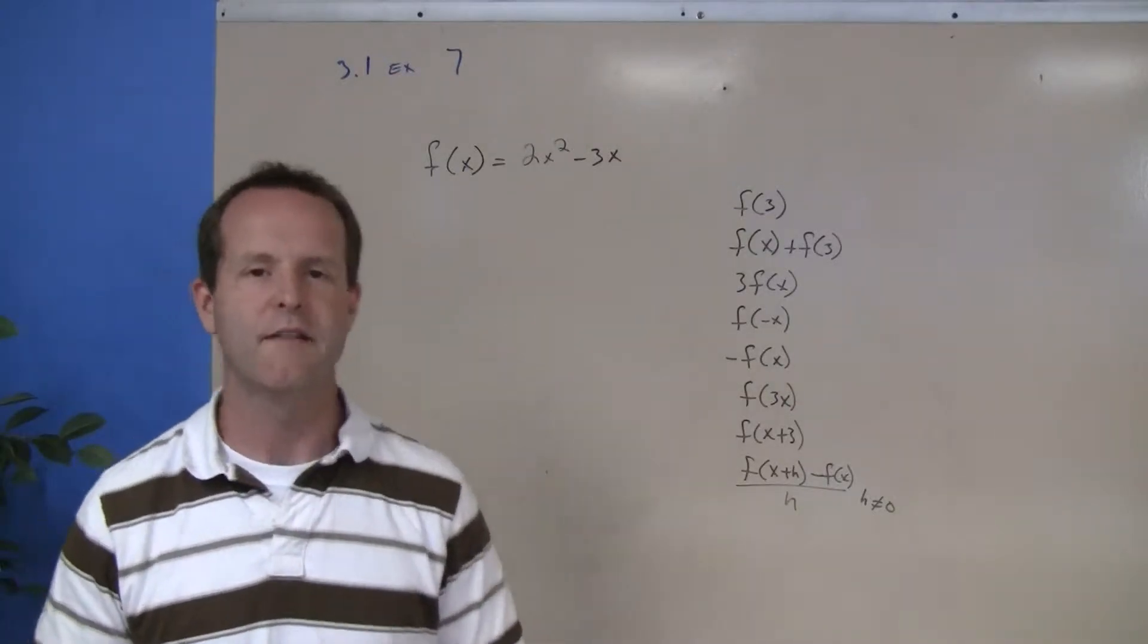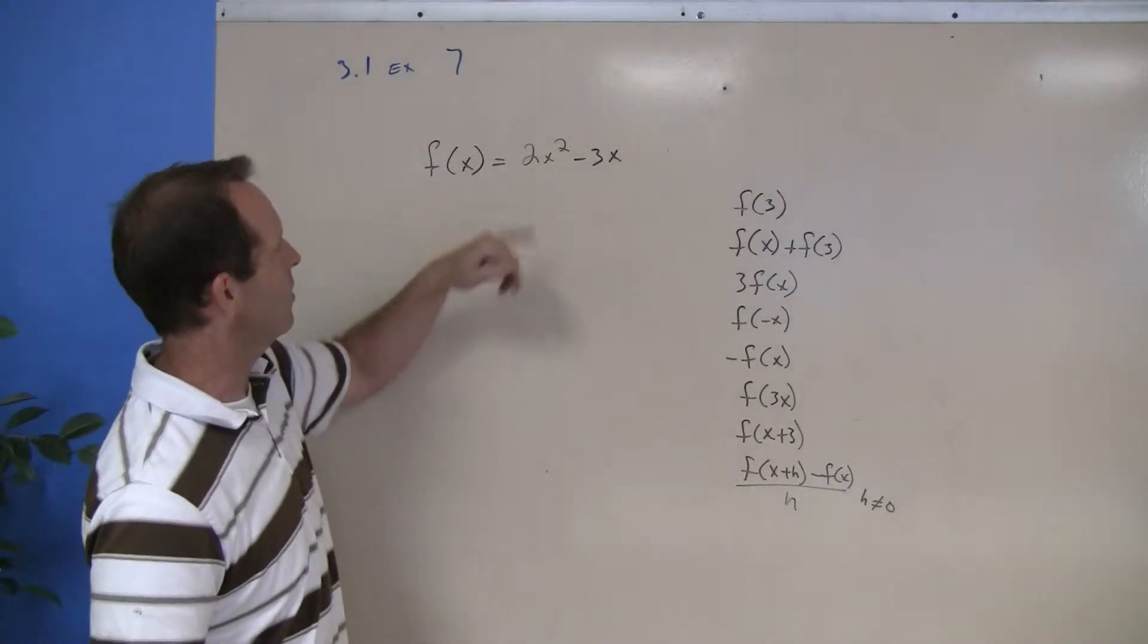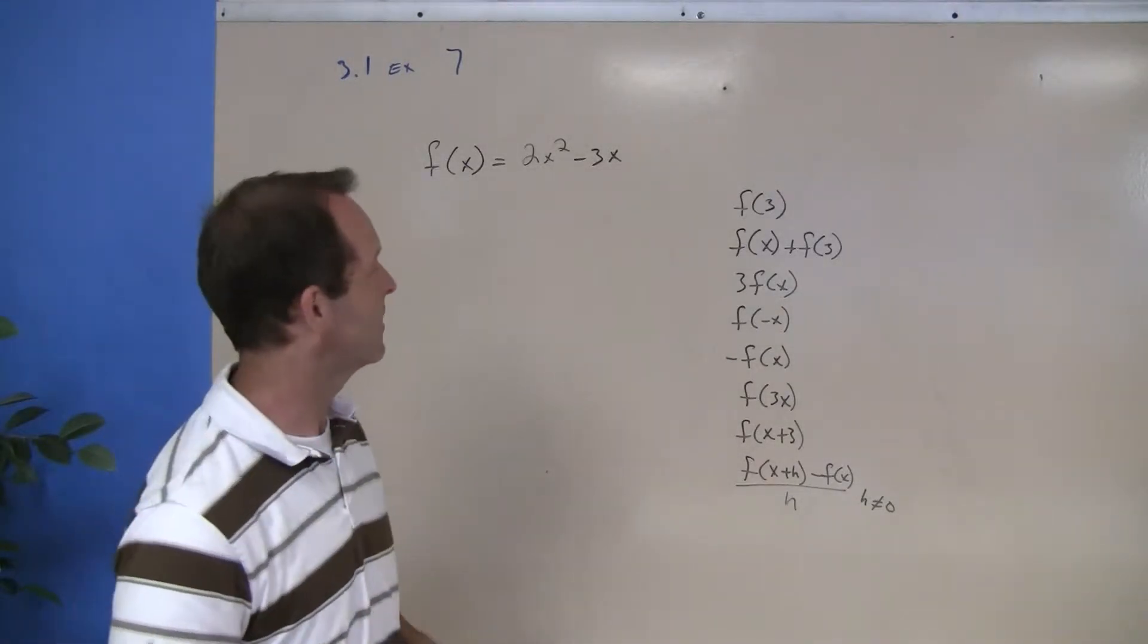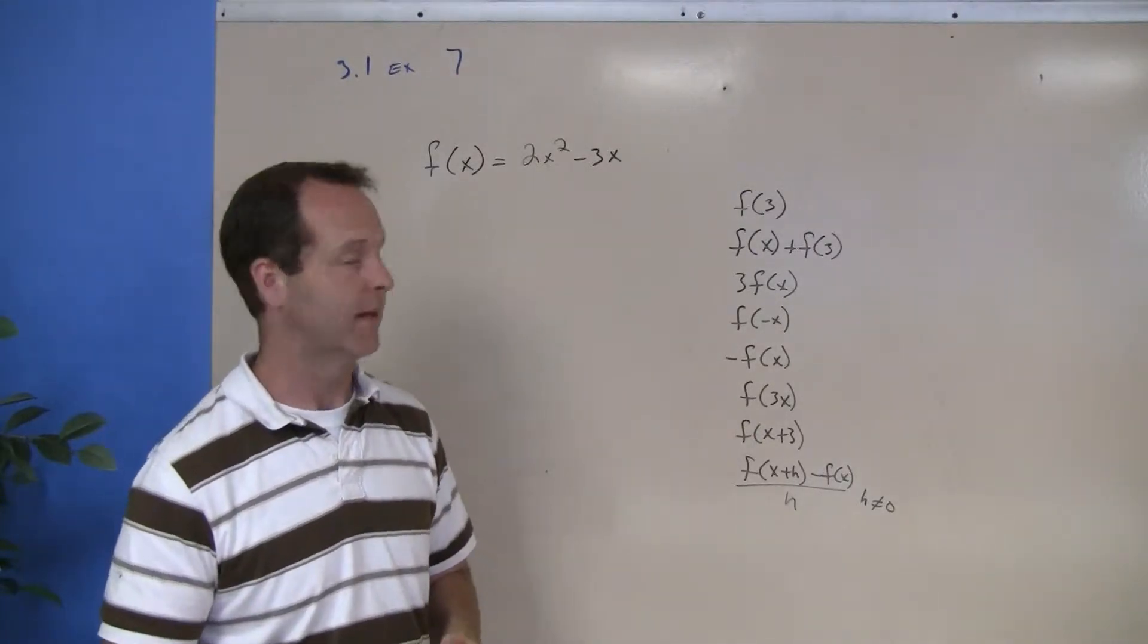I have a function that we want to evaluate in several different forms. f(x) equals 2x squared minus 3x. I'm given a list of different types of ways to evaluate this.